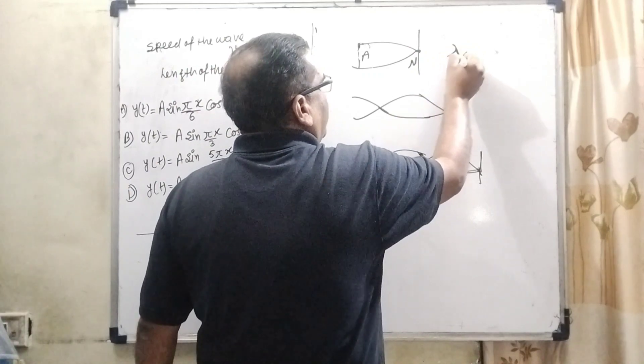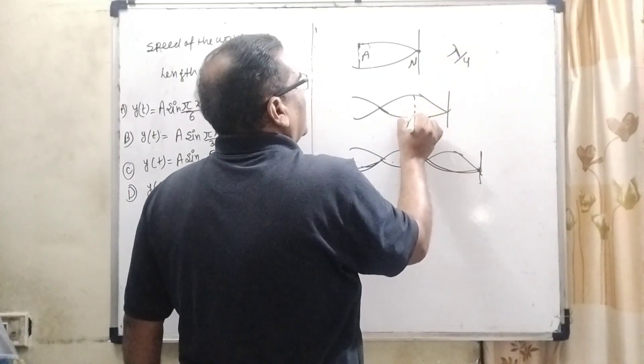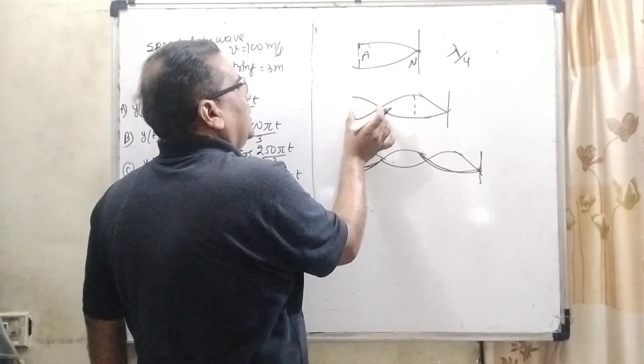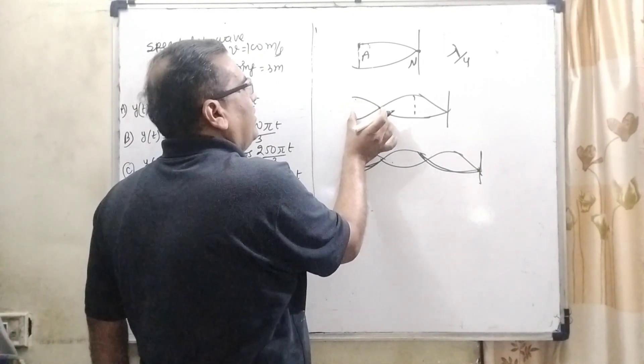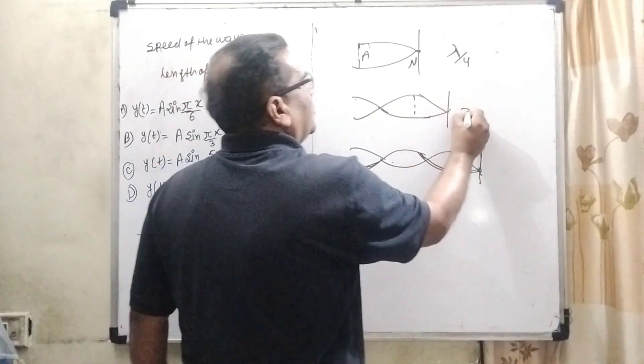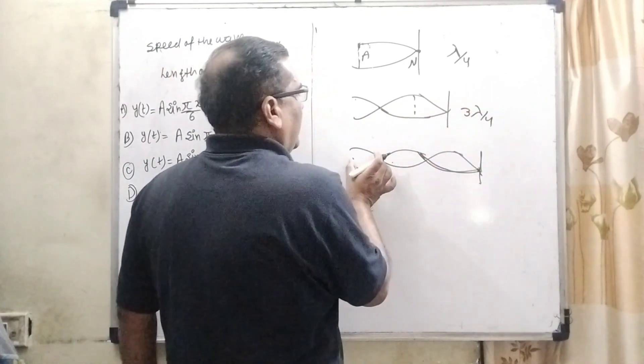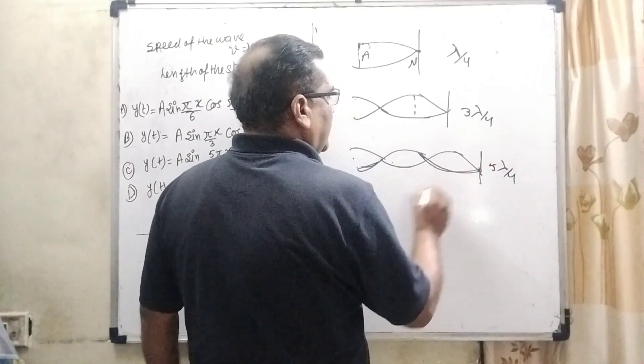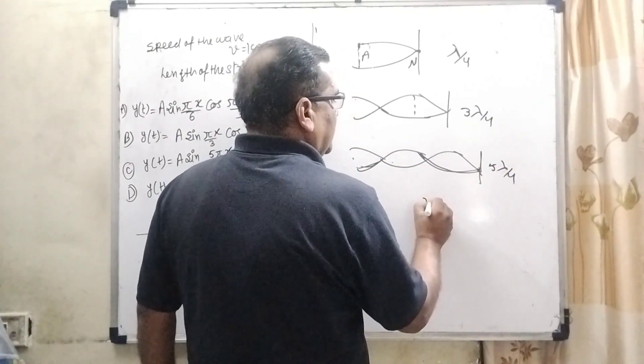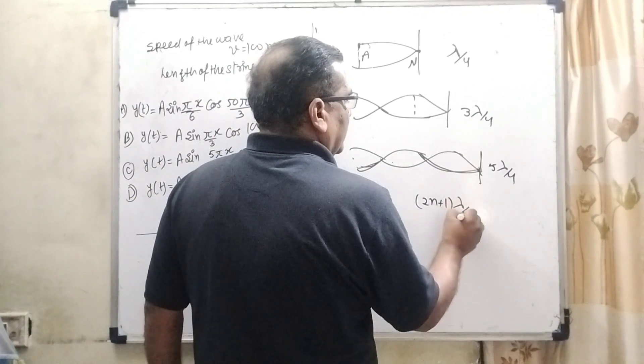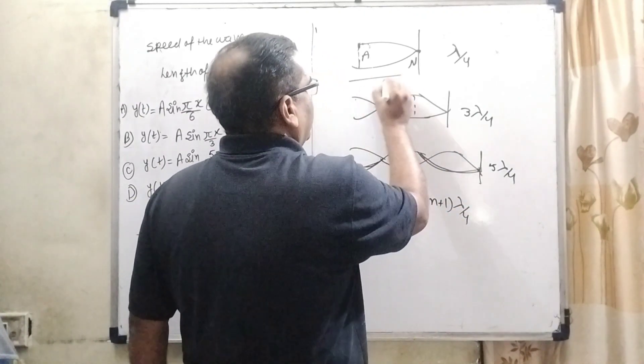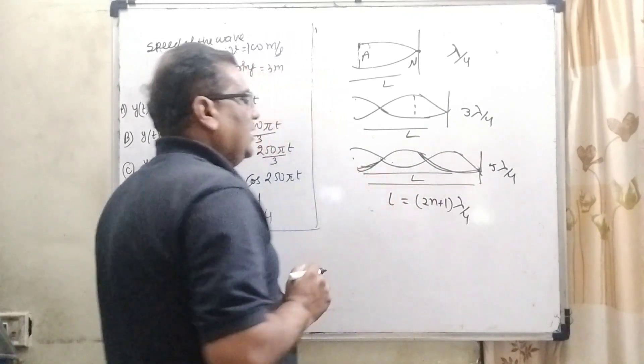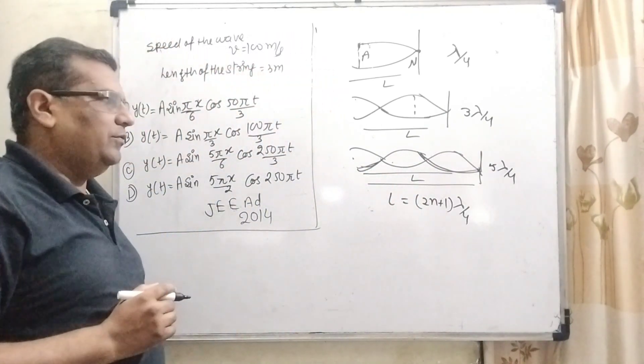The pattern will be formed like this. First mode of vibration: lambda by 4. Here, the distance from the node to anti-node is lambda by 4. So lambda by 4, then 3 lambda by 4, then 5 lambda by 4. For general condition, we use 2n plus 1 lambda by 4. That is the total length of the string. Here the general condition is l equal to 2n plus 1 lambda by 4.